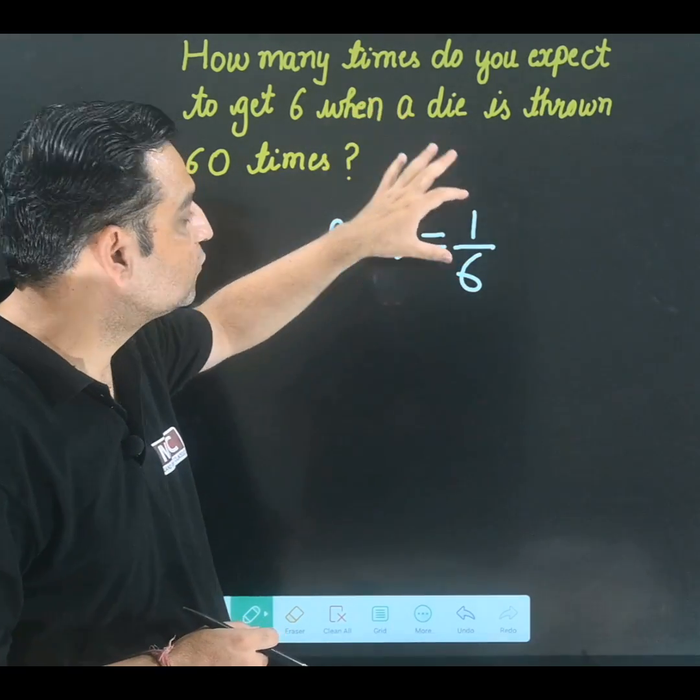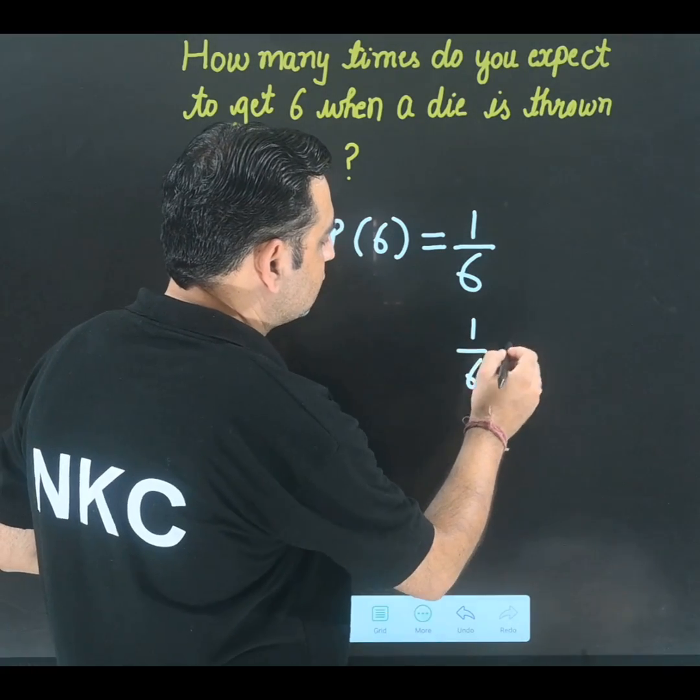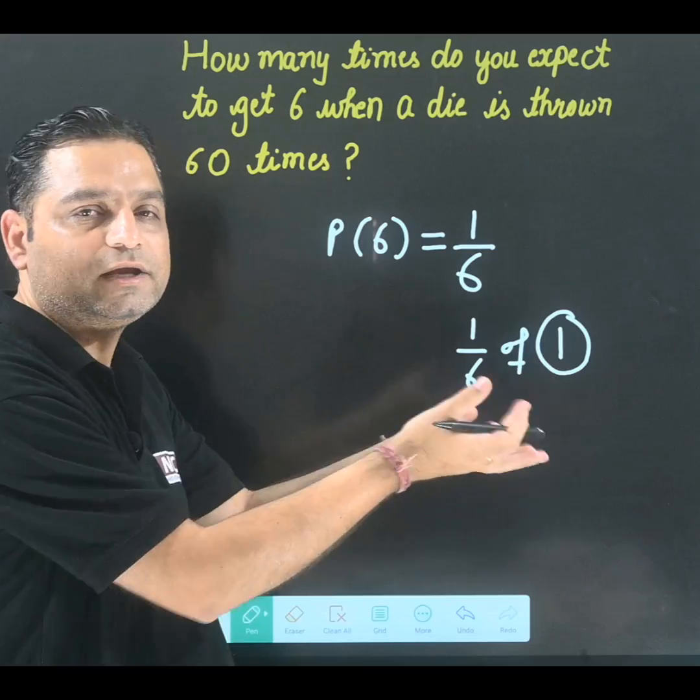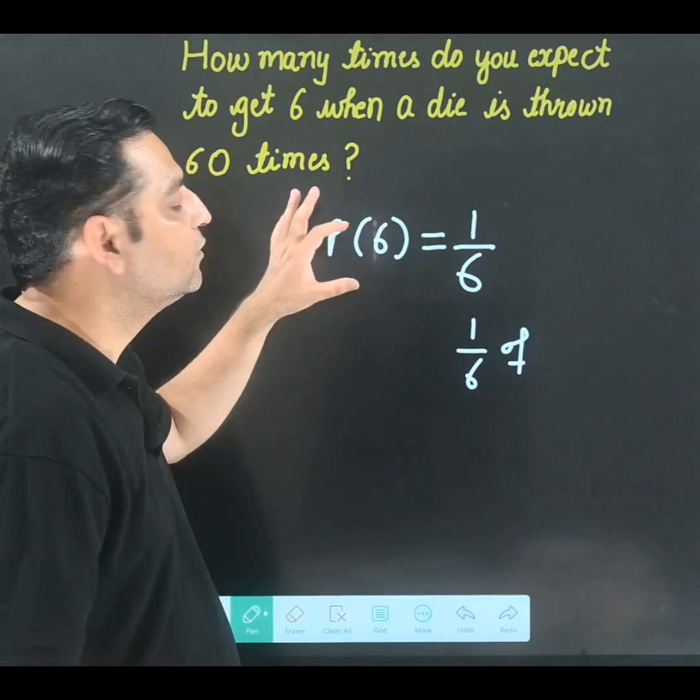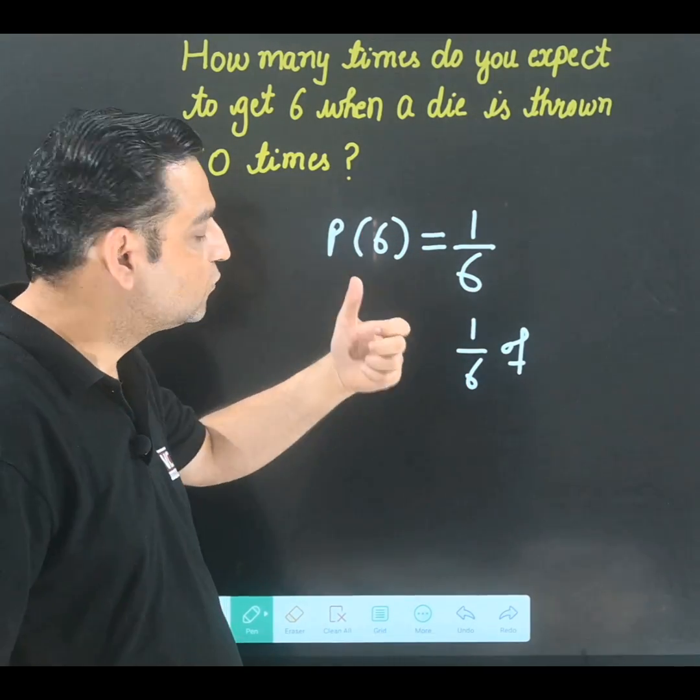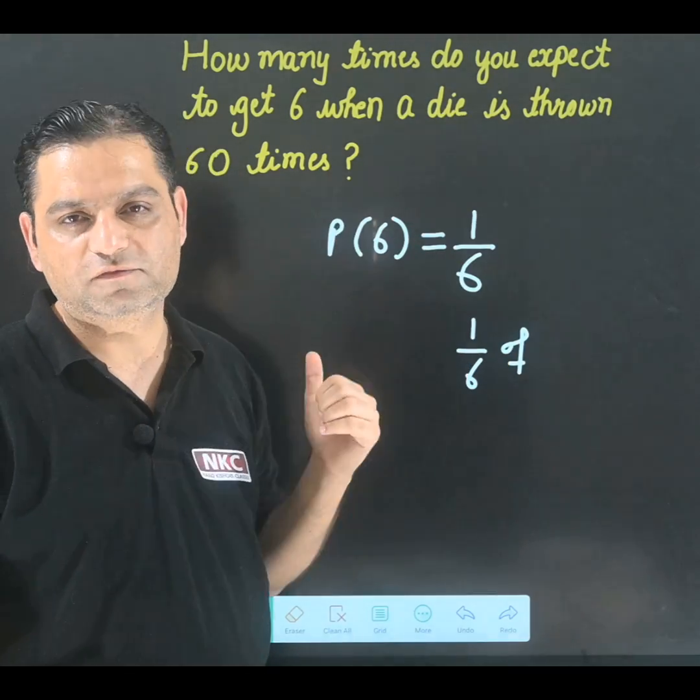Now when one time it was thrown it is 1 sixth. Actually it is 1 over 6 of 1, because it was thrown one time. Now when my die is thrown 60 times, that means chances for 6 to come will be 1 sixth of total number of times it is thrown.